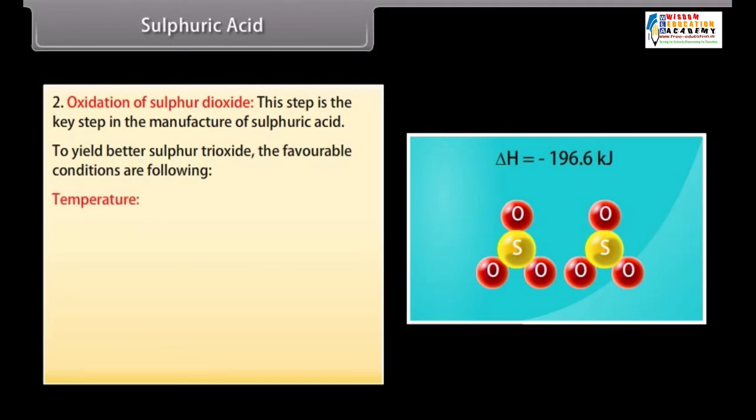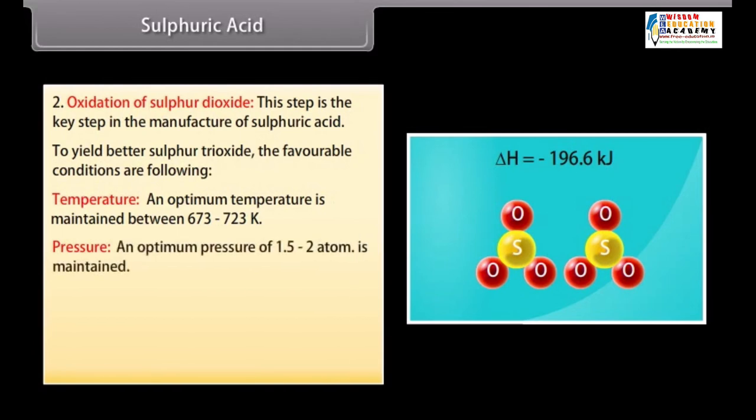Temperature. As the reaction is exothermic, a low temperature favours the forward reaction. An optimum temperature is maintained between 673 to 723 Kelvin. Pressure. A high pressure favours the process. An optimum pressure of 1.5 to 2 atm is maintained.